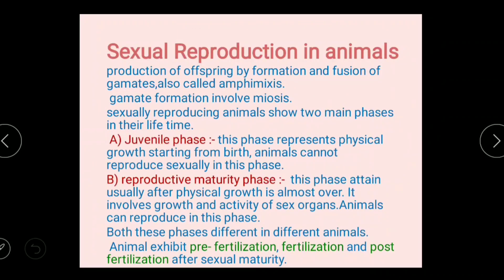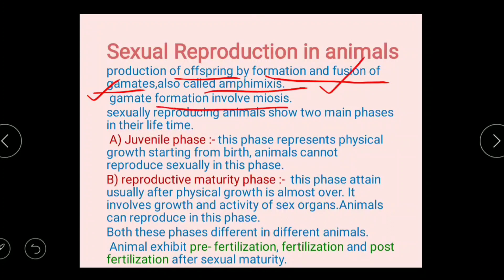Next is sexual reproduction in animals: the production of offspring by formation and fusion of gametes. In sexual reproduction there is formation of gametes through meiosis, then fusion of gametes. It is also known as amphimixis. Gamete formation involves meiosis — cell division for the formation of haploid gametes — and fusion of haploid gametes to form a zygote.